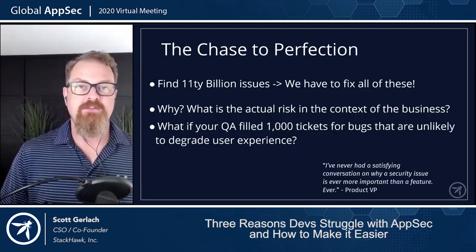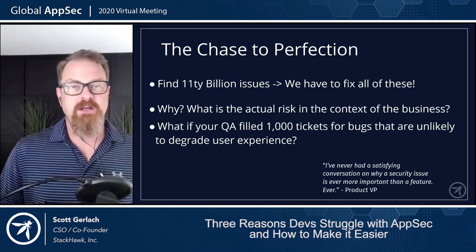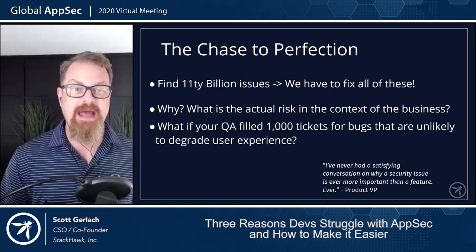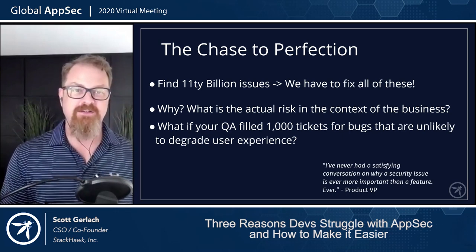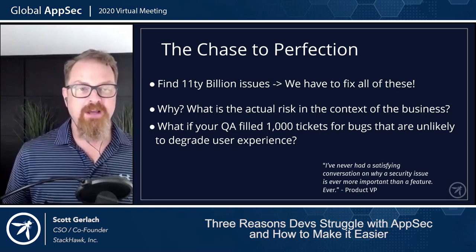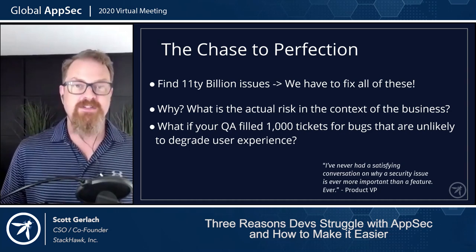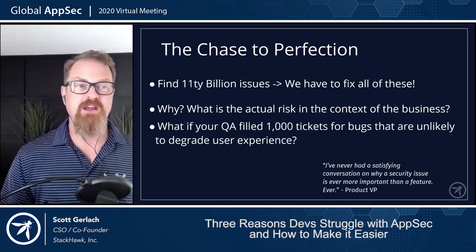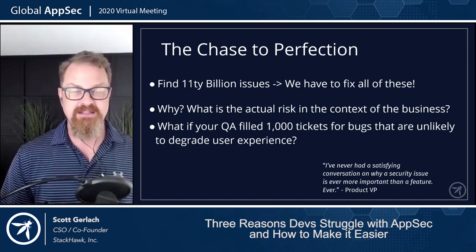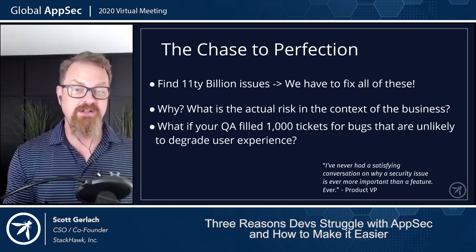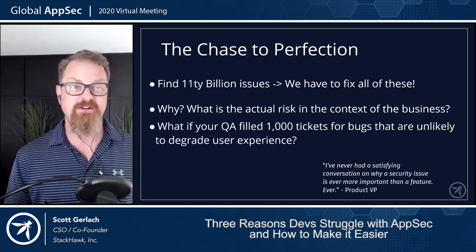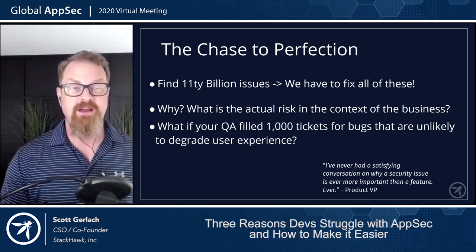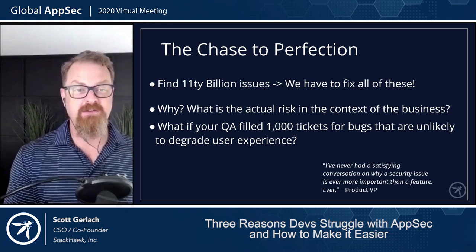One of the other problems we have as security folks — and this always hurts my soul — is this chase to perfection. We always think of eliminating all risk: patch all the things, don't do anything in the cloud. We come up with: I found all these issues, we should fix every single one. If patching isn't 100%, then it's 0%. We struggle to think of risk in the context of the business. The business is there to take risk and provide solutions to a customer. Even thinking you can solve a problem for a customer is a risk itself.